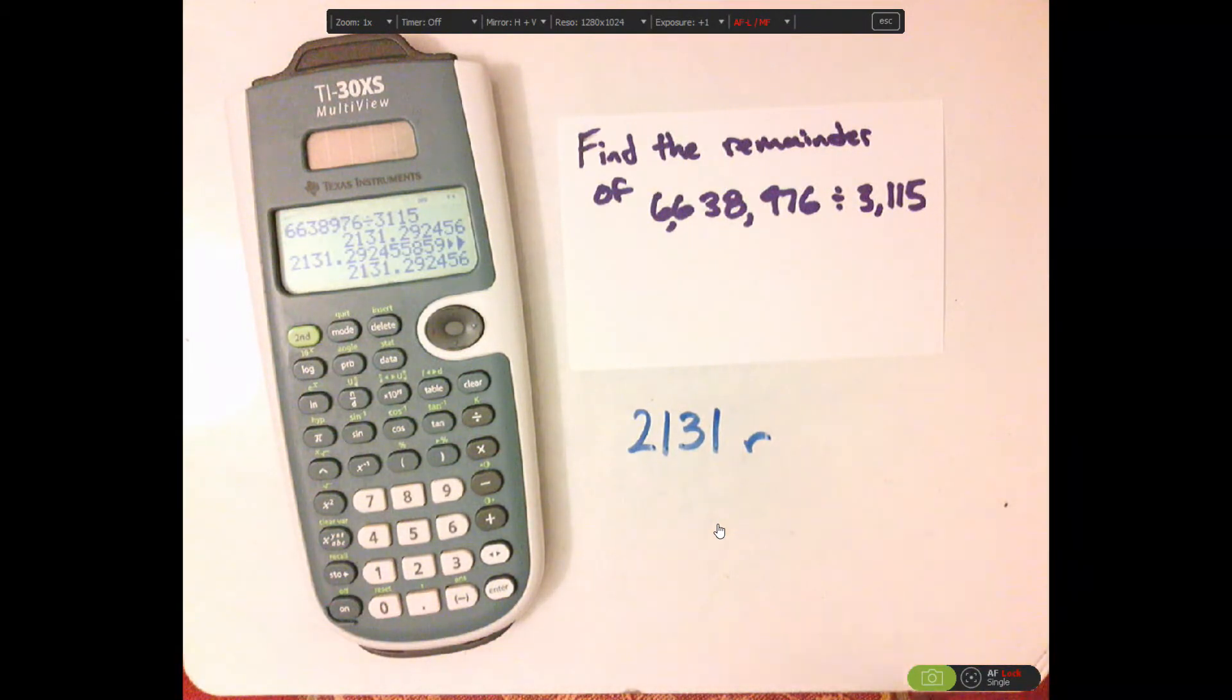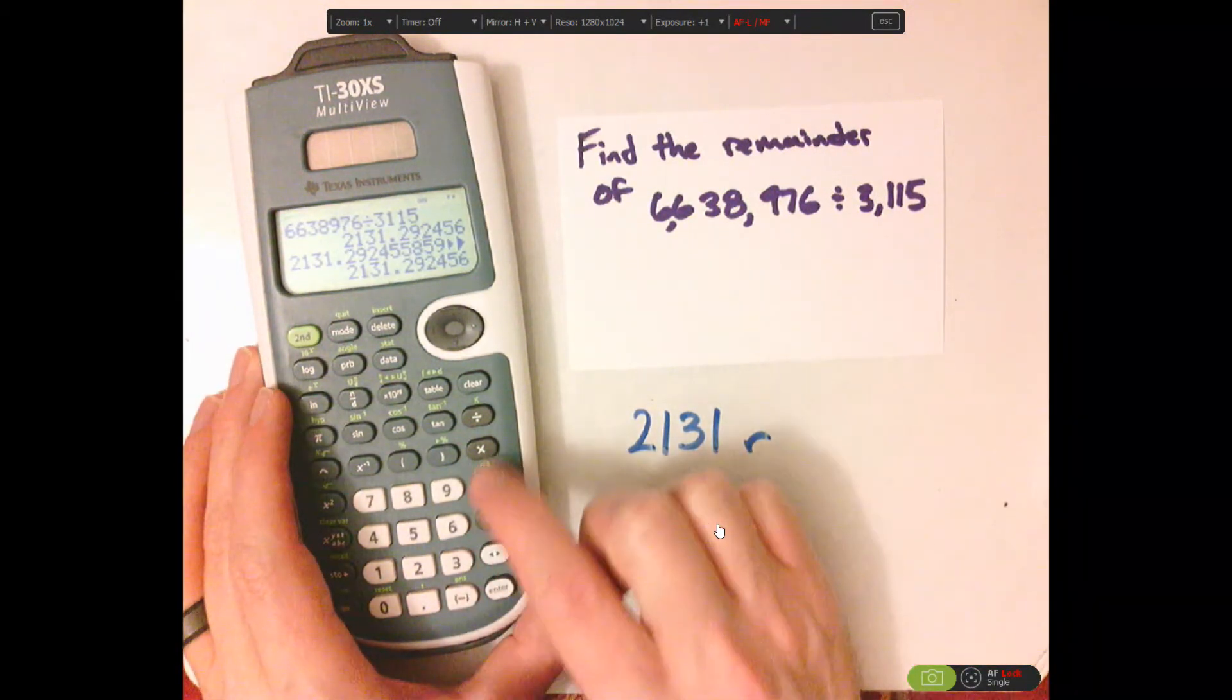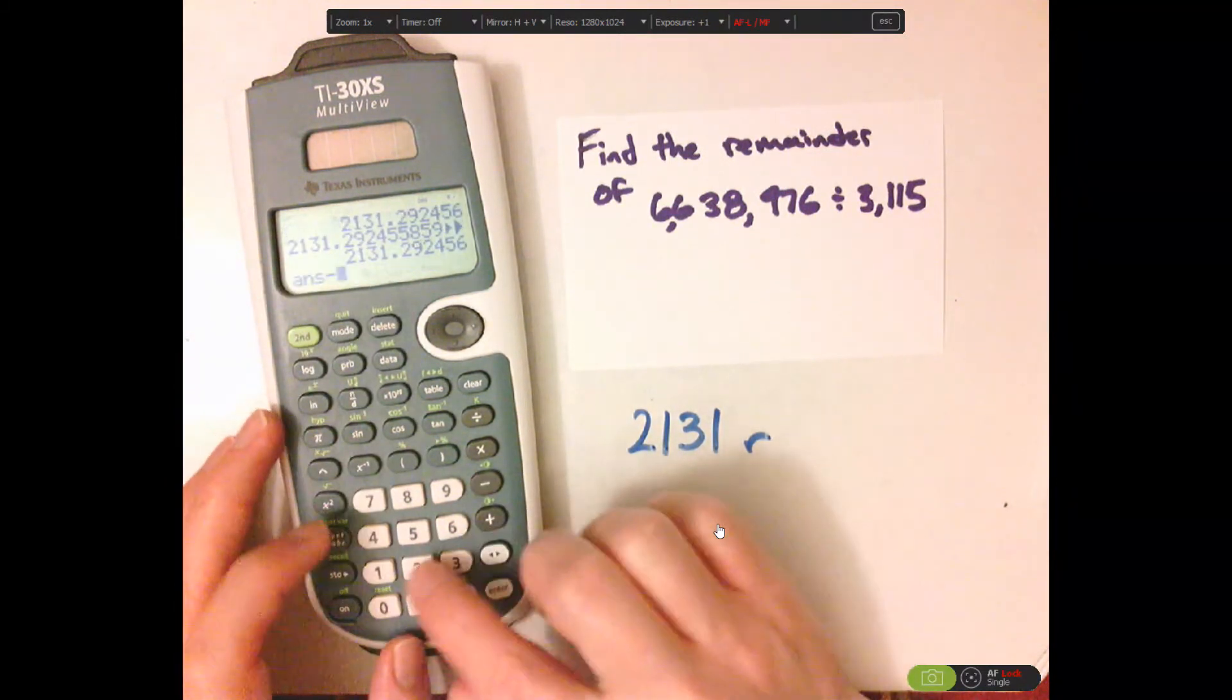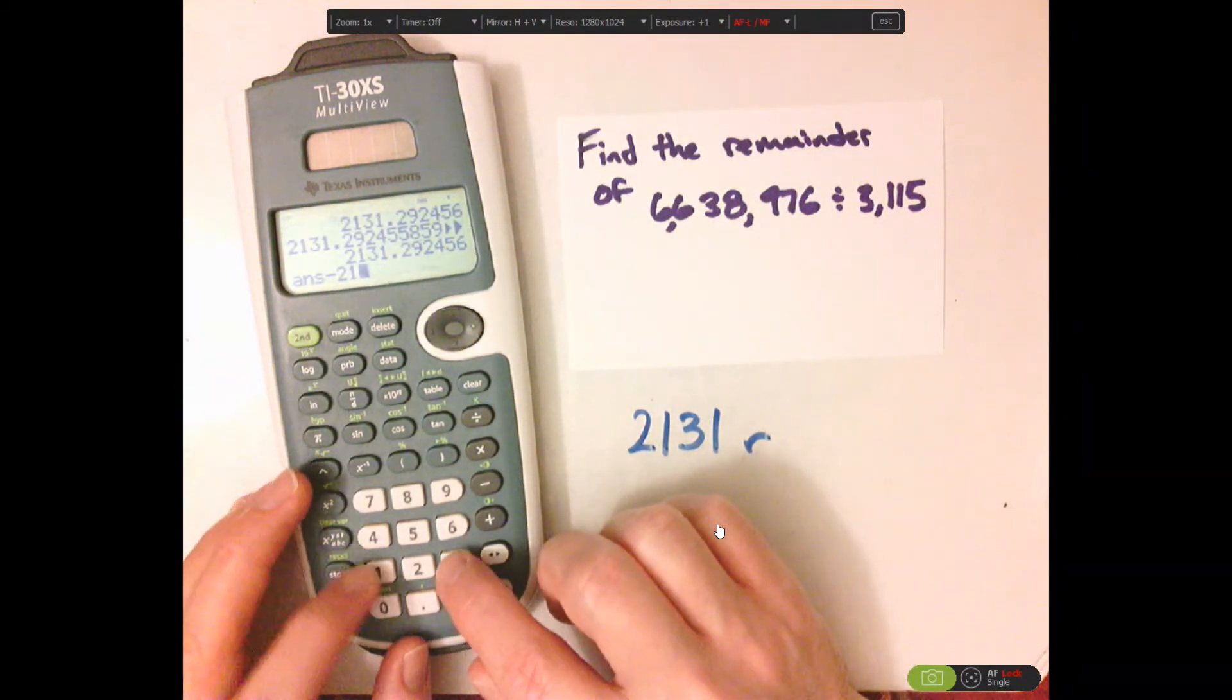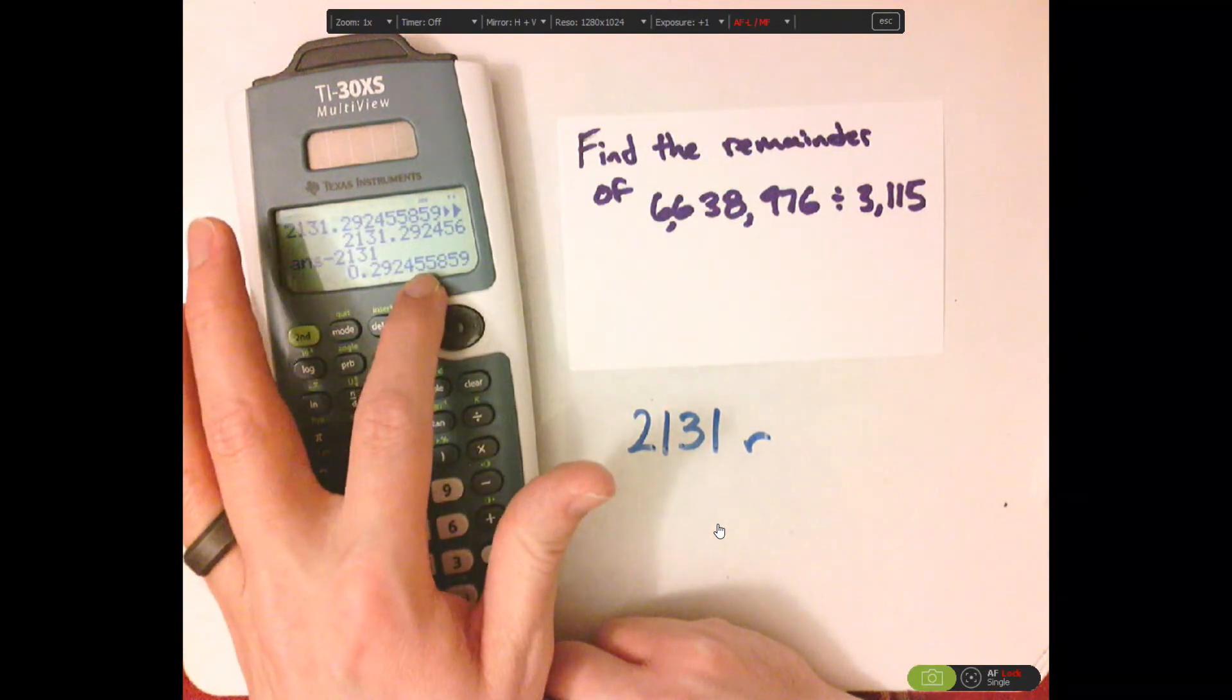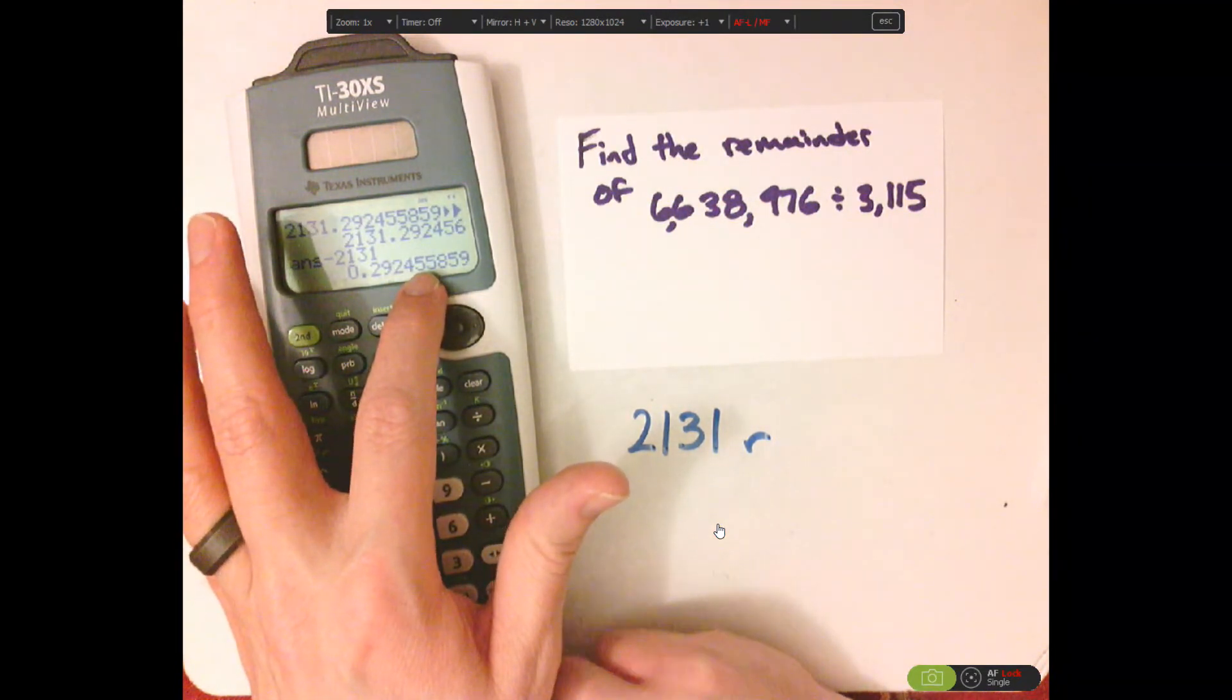Looking for the remainder. So, start by subtracting the whole part, 2,131. Now, I have the decimal part. That decimal part is the remainder.